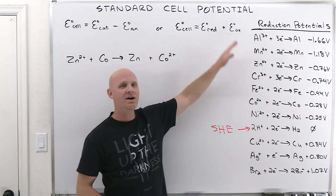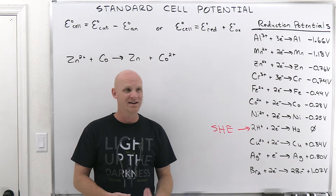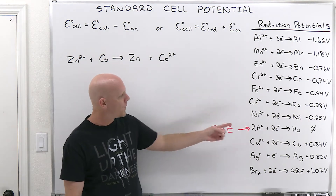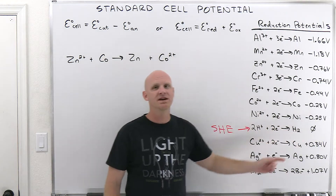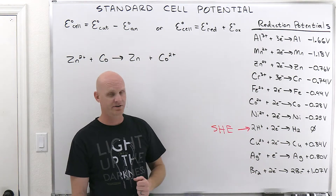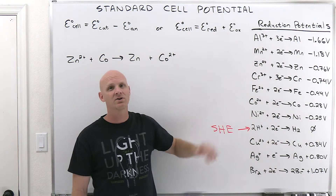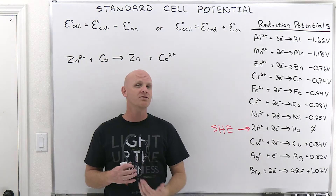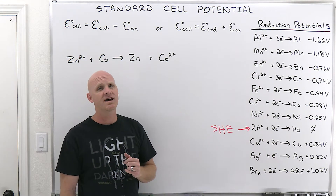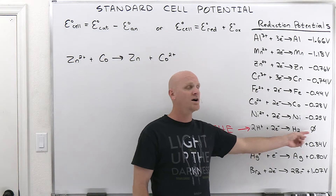You could compare any two half reactions, combine them, and get a voltage value — but you'd only know their relationship to each other. By assigning one single reaction a value of zero and using that as a reference electrode, everything else can be compared to each other as well. You should know the reaction for the standard hydrogen electrode and that it's assigned a value of zero.